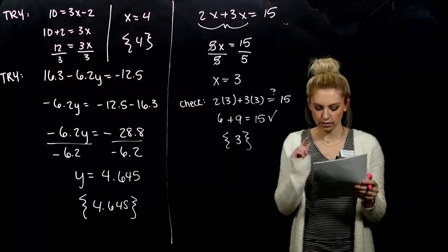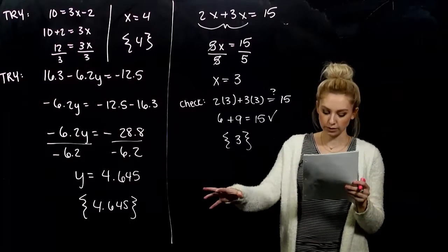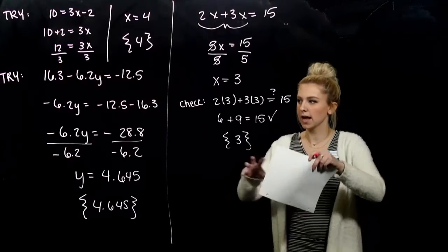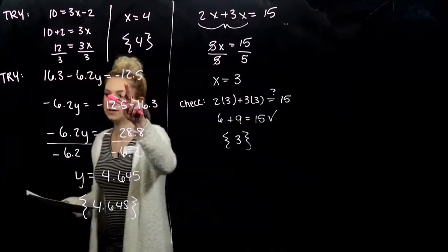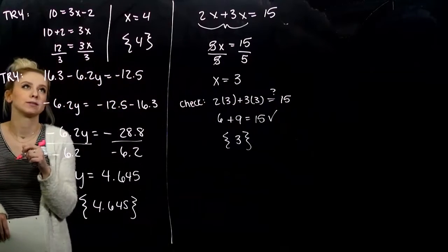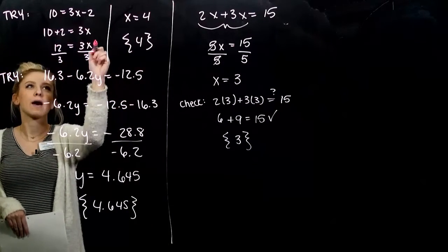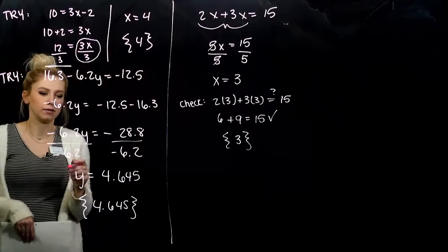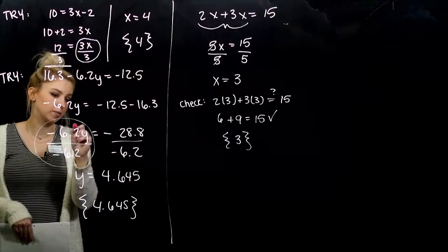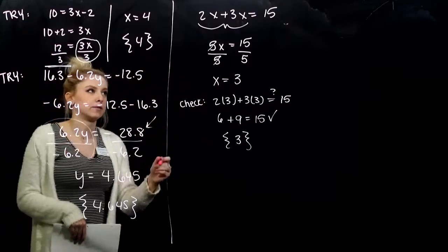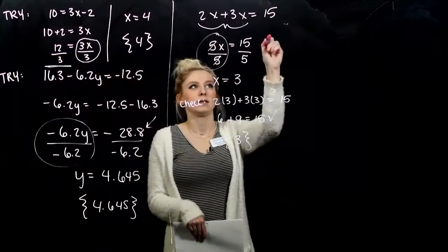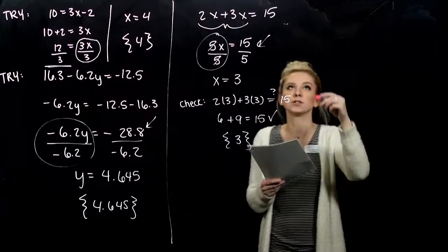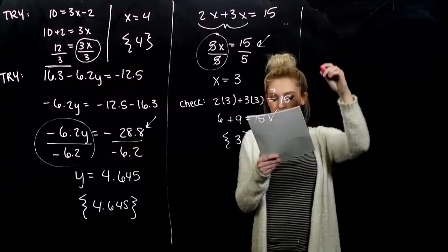Get all the terms with a variable on one side and all of the constants on the other — we need to have those split up. In all of these cases, we were working towards that setup: x terms on one side, constants on the other. Whatever variable we're dealing with, isolated from constants. Let's do another example.